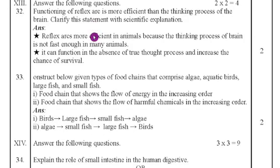13th main answer the following questions. 32nd question. Functioning of reflex arc is more efficient than the thinking process of the brain. Clarify this statement with scientific explanation. Because reflex arc more efficient in animal because the thinking process of brain is not fast enough in many animals. It can function in the absence of true thought process and increases the chances of survival.